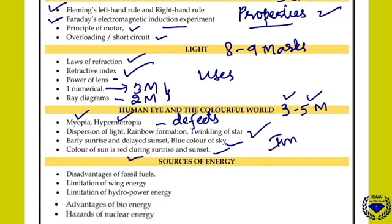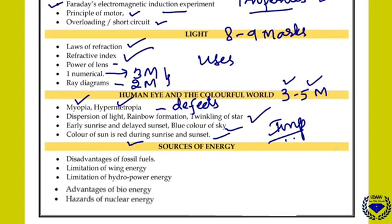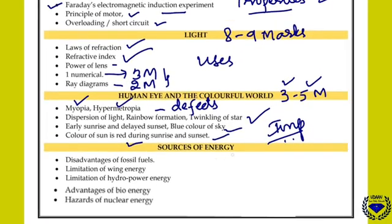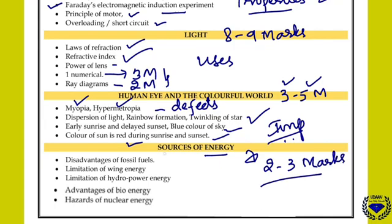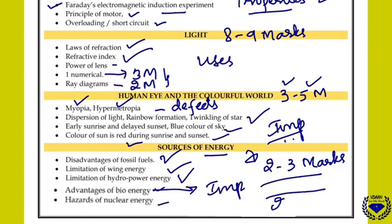The last chapter in physics is sources of energy, which carries a maximum of 2 to 3 marks. Important topics include: advantages of fossil fuels, limitations of wind energy, limitations of hydroelectric or hydropower plant, advantages of biogas plant — biogas is very important — and hazards of nuclear energy. In total, you can expect 28 marks from this entire physics syllabus. Thank you.